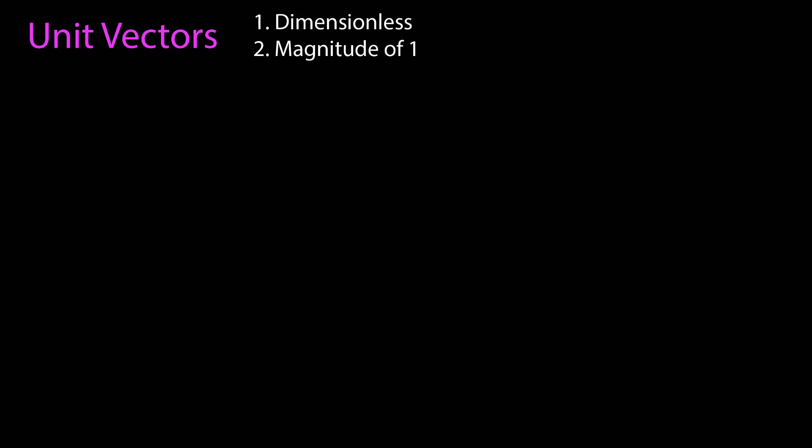Every vector that has these characteristics is a unit vector. Now there are some books, when they talk about unit vectors, imply that a unit vector has to point along a certain axis or something like that. That's not right. If they say that, they're wrong. A unit vector is this, and only this. It's dimensionless and has a magnitude of 1.